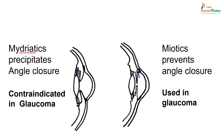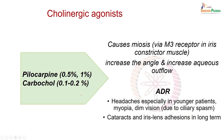Mydriatic agents precipitate closed-angle glaucoma because when there is mydriasis, the ciliary muscle relaxes, and when it relaxes it crumbles and closes the angle, creating increased pressure.